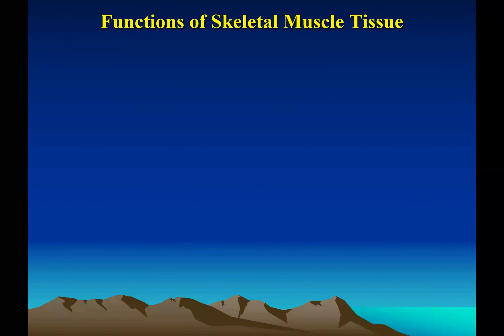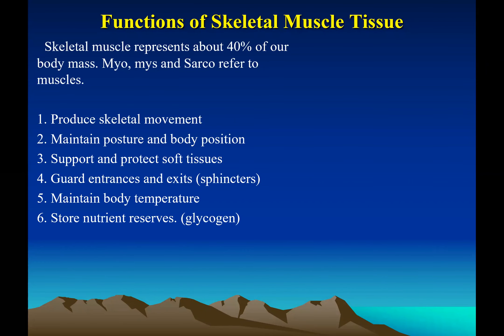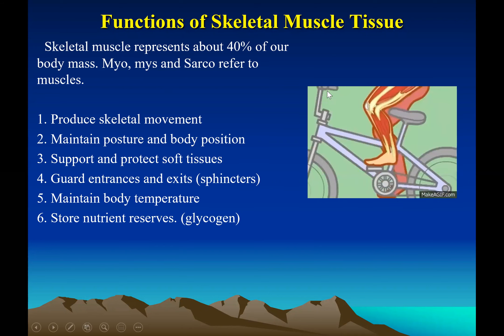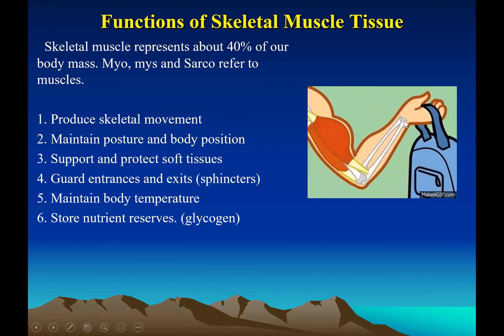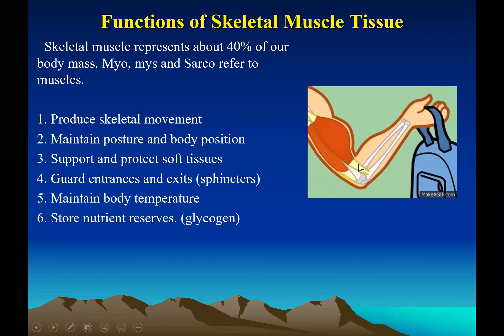What are the main functions of skeletal muscle? About 40% of your body mass comes from muscles. Words that start with 'myo' or 'sarco' all refer to muscles. Muscles bring about movement in the body — when the muscle contracts, it acts as a lever to bring about body movement, allowing you to walk, run, and dance by pulling on the bones.